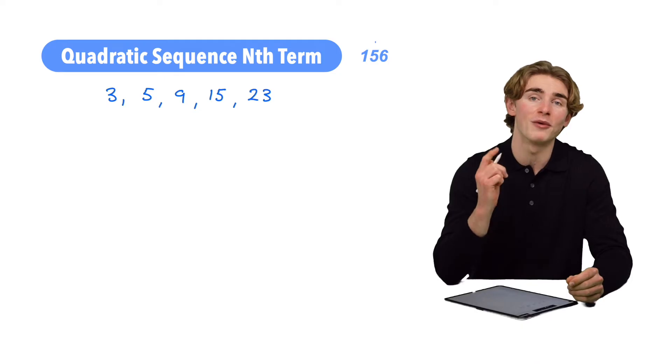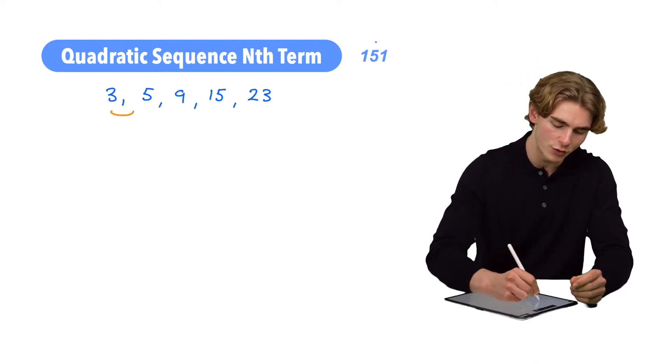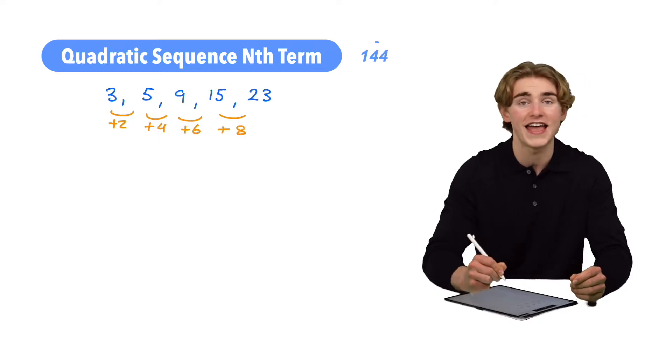Step number one, we're going to find our first difference and our second difference. Let's get it done. So from 3 to 5, what do we do? We plus 2, from 5 to 9, plus 4, from 9 to 15, plus 6, and from 15 to 23, we're going to plus 8.